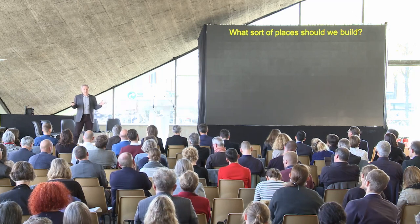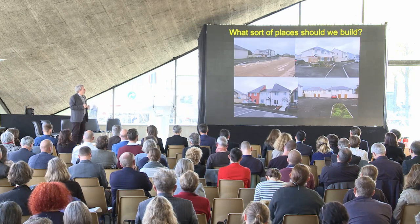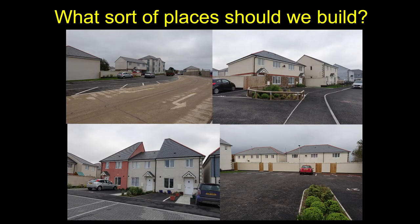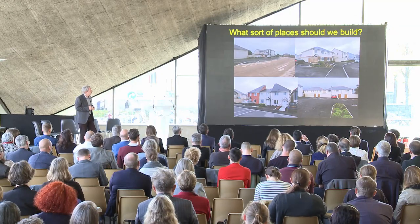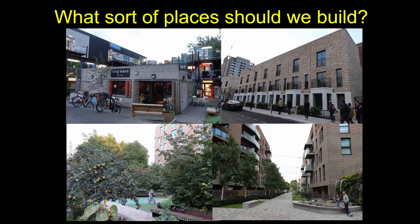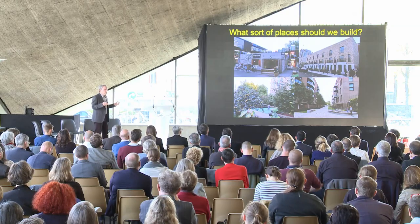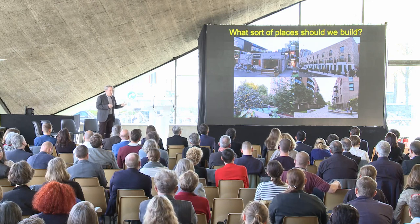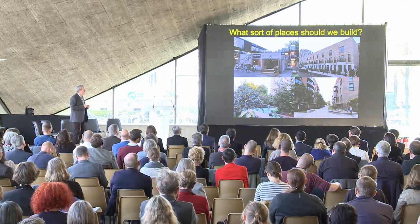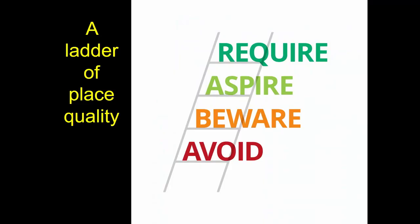Underpinning this is the idea of a virtuous loop: place quality delivers place value — under all four big policy priorities — and we can use that value to define place quality. Places delivering on that value are high quality places. What does this say about the sorts of places we should be building? We shouldn't be building suburban, disconnected, car-dominated environments. What we should be building is mixed, green, connected streets, places for play — more vibrant, medium density. These sorts of places seem to be fundamentally good for us, for our health, for society, for the economy, and for the environment.